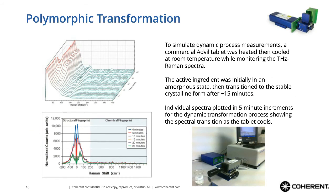Terahertz Raman is not just for identifying polymorphic form — the strong signal strengths make it easy to identify polymorphic transformations in real time and in situ. Here, we've simulated a dynamic process measurement by heating a commercial Advil tablet to a high temperature where it passes through a polymorphic transformation, then allowing it to cool at room temperature while monitoring the terahertz Raman spectrum. You can easily see the material changed state after about 15 minutes, and by plotting the individual spectra, you can observe the effect on the low-frequency region very clearly.